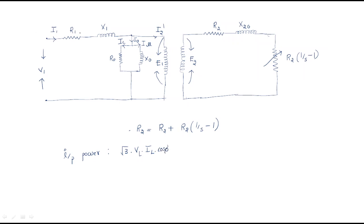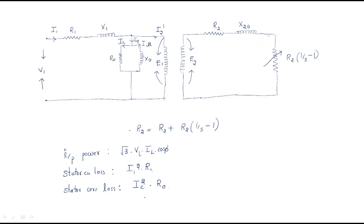The r1 directly gives the combination of loss. The stator copper loss equals I1 squared times r1. X1 has a voltage drop but no power loss. The core loss is represented by the current IC, so the stator core loss equals IC squared times the core loss resistance.